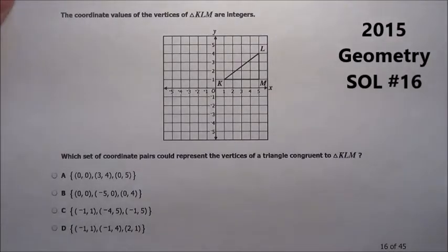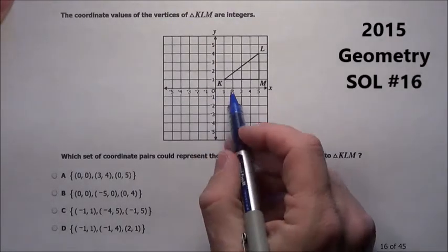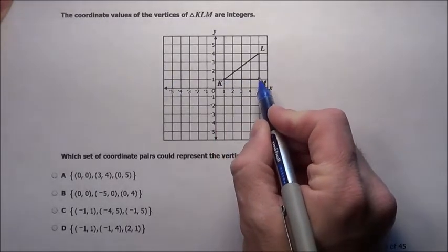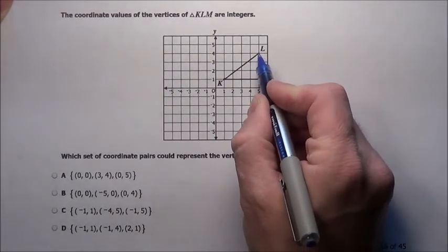All right, problem 16. It says the coordinate values of the vertices of KLM are integers. Okay, so we can see that's at 1, 1, 5, 1, and 5, 4.